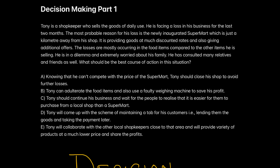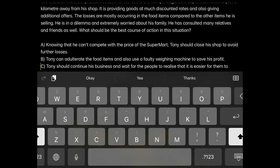The remaining part of the passage about losses in food items, his family worries, and consulting relatives is just additional context. The real question is: what should be the best course of action? Option A says that knowing he can't compete with the supermarket's prices, Tony should close his shop and avoid further losses. This option should be avoided at any cost — it is a bad decision, because running away from a situation and not facing a problem is not a required skill.